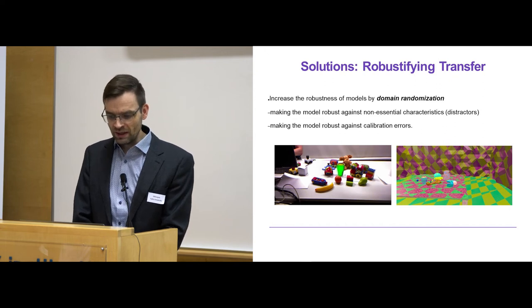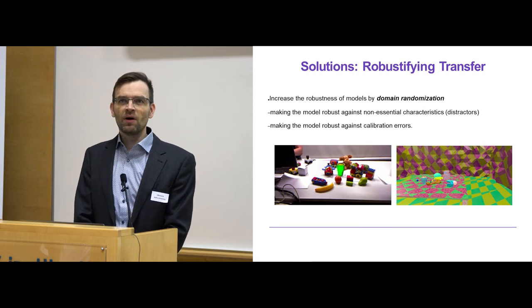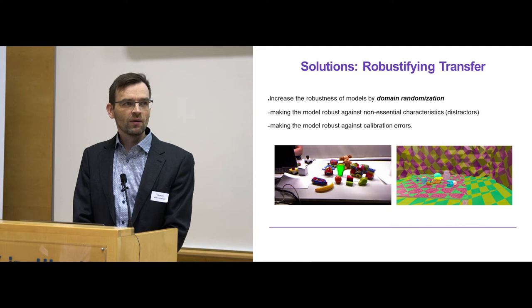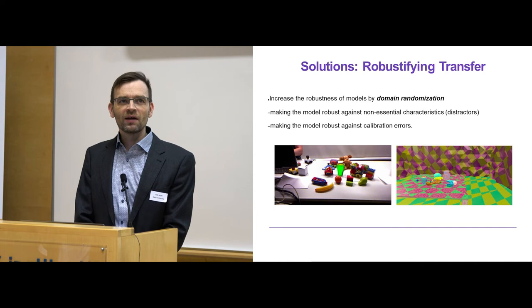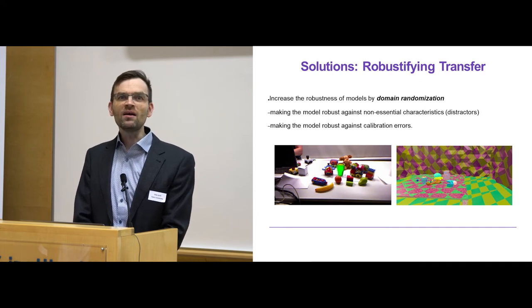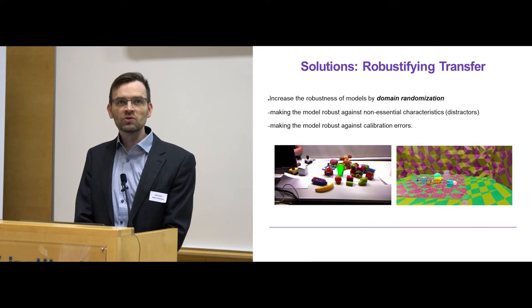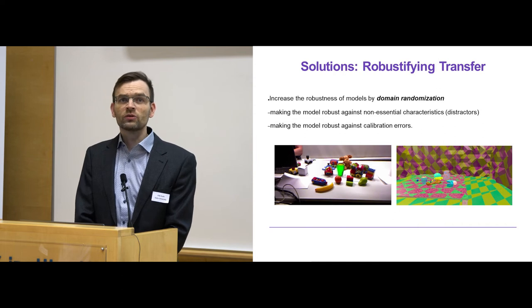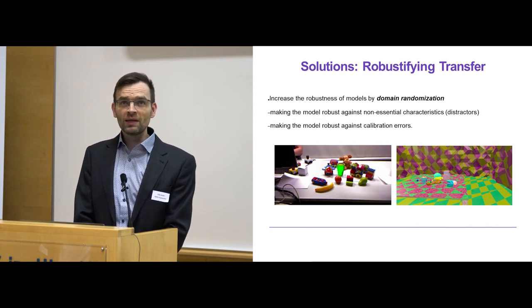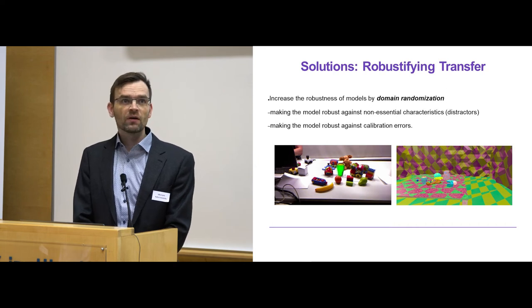In order to, for example, learn to detect in this case the mug in the environment, despite what is the particular appearance of the particular mug, by giving it all kinds of crazy mug-like things and training the system to actually ignore all things that are not relevant. Similarly, we can also train things to be robust against calibration errors, by basically making the controller work across various different calibration parameters.